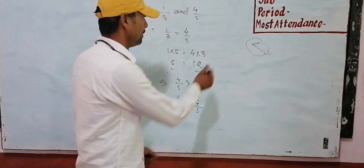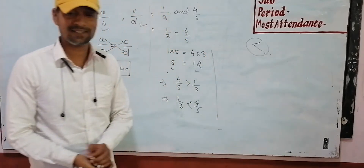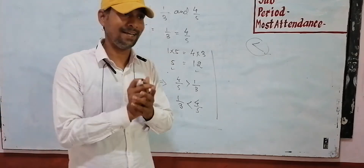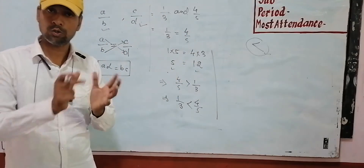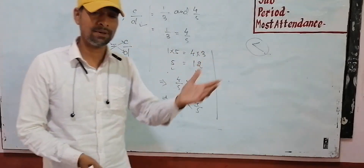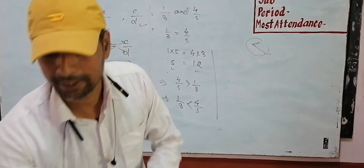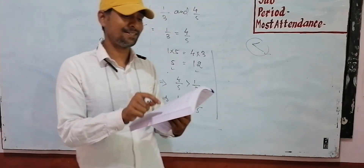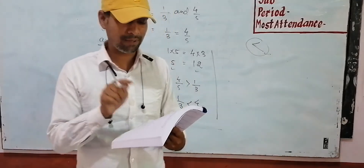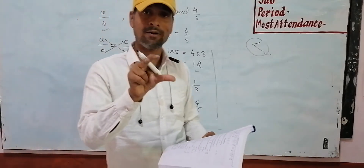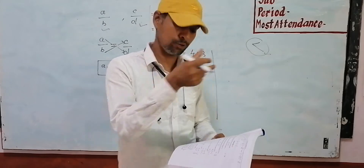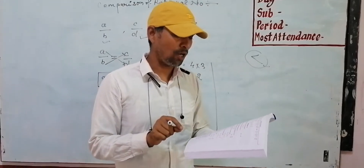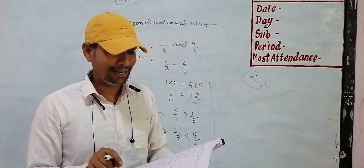Now students, let's look at Exercise 1A. Question number 1, question number 2, question number 3. Question number 4: express each of the following rational numbers in standard form.